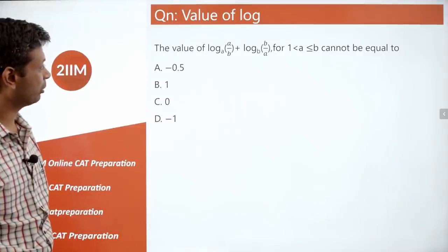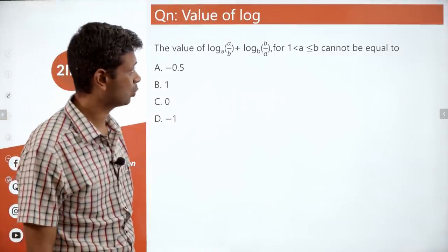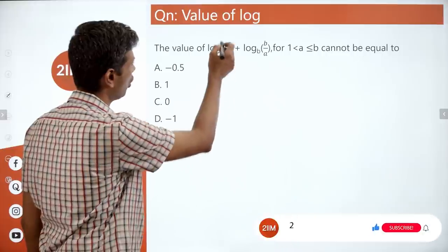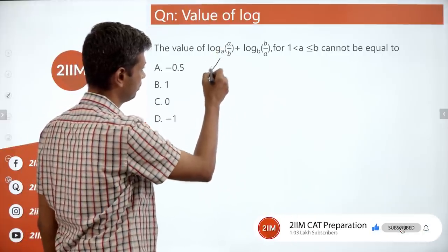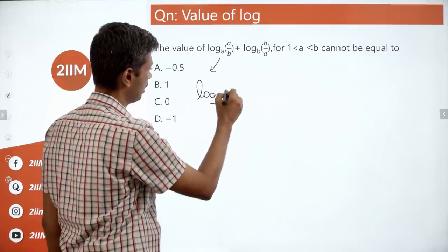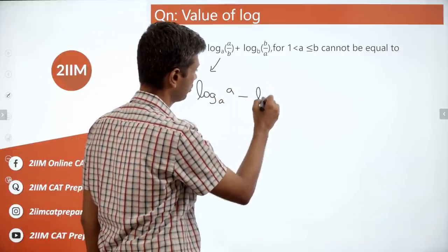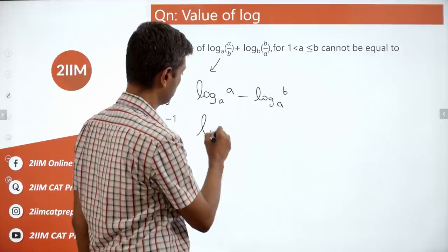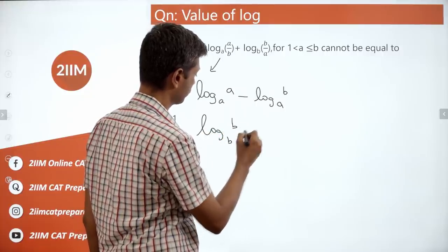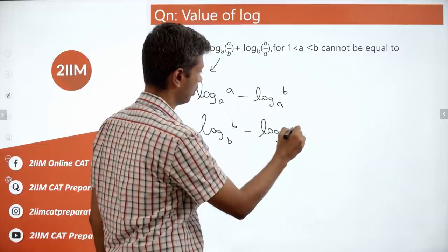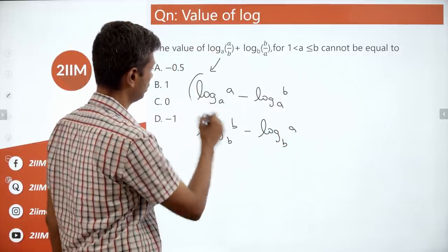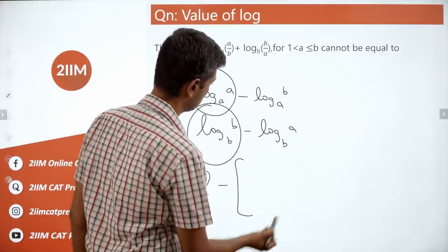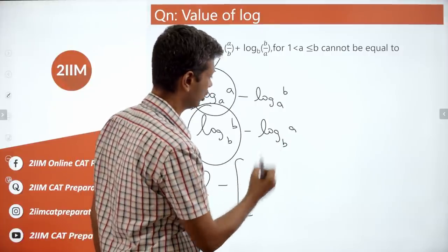The value of log(a/b) base a + log(b/a) base b, for 1 < a ≤ b. First, log(a/b) base a = log_a(a) − log_a(b) = 1 − log_a(b). Similarly, log(b/a) base b = 1 − log_b(a). So the full expression simplifies to 2 minus [log_b(a) + log_a(b)].